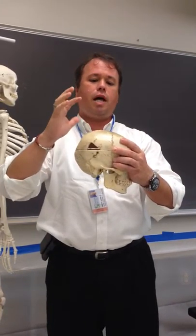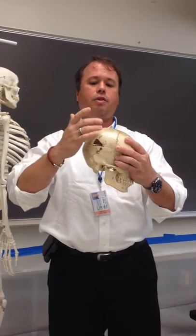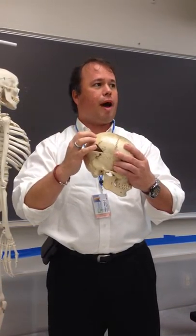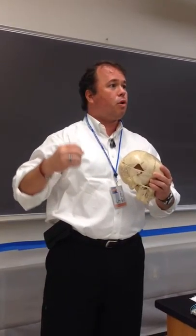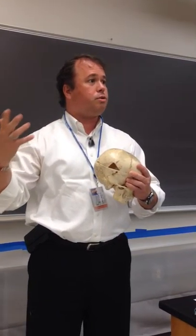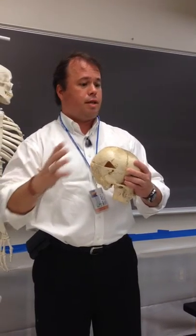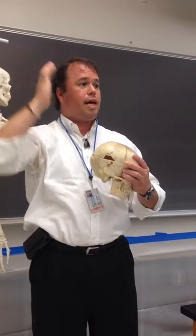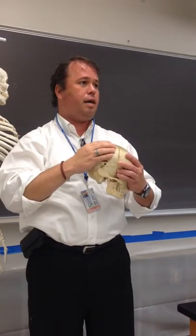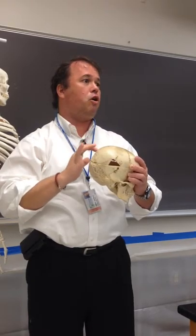If we look at the sides of the skull, they are the parietal. Just like the outside coverings of your serous membranes are called parietal membranes, the majority of the superior lateral portion of the skull is going to be the parietal bones.